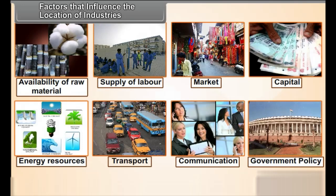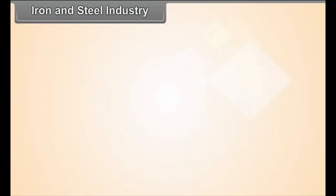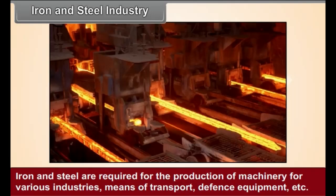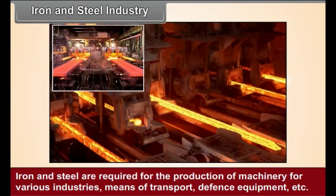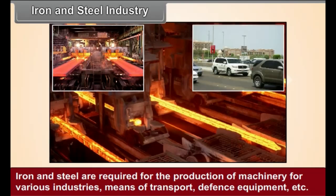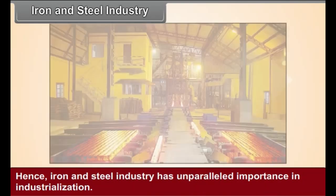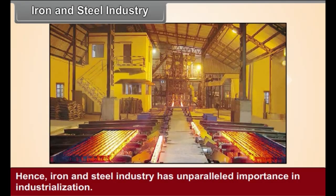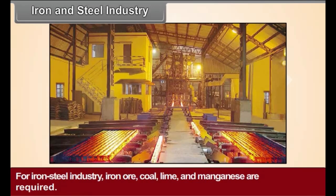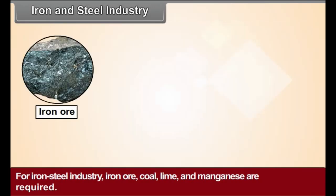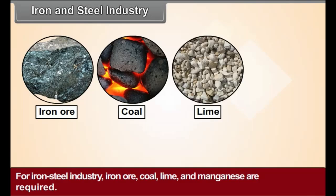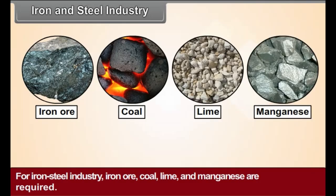Iron and Steel Industry. Iron and steel are required for the production of machinery for various industries, means of transport, defense equipment, etc. Hence, iron and steel industry has unparalleled importance in industrialization. For the iron and steel industry, iron ore, coal, lime, and manganese are required.